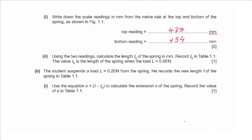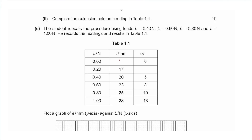Part b(i) says to calculate the length L0 of the spring in millimeters. L0 is the length when the load is zero, so we subtract: 454 minus 439 gives us 15 mm, and we record that in table 1.1.